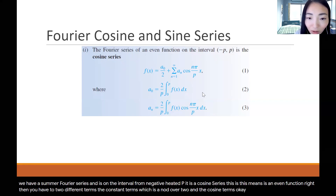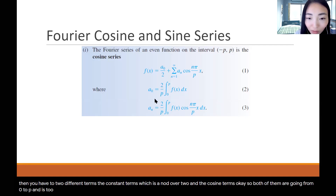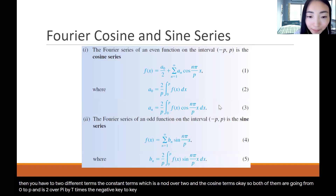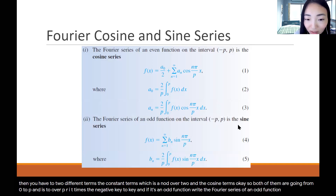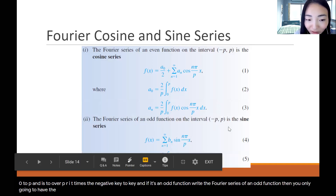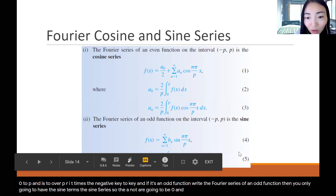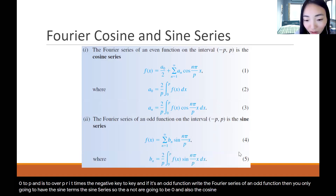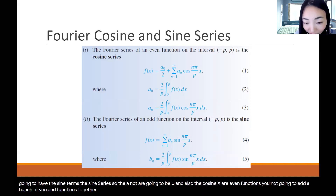Both of them are going from 0 to p, and it's 2 over p — 2 times the negative p to p integral. And if it's an odd function, the Fourier series of an odd function, then you're only going to have the sine terms, the sine series. So the a0 is going to be 0, and also the cosine terms are even functions — you're not going to add a bunch of even functions to get the odd function.